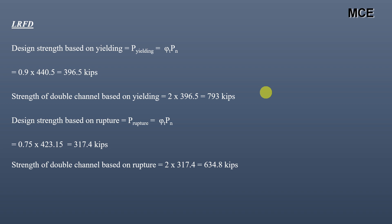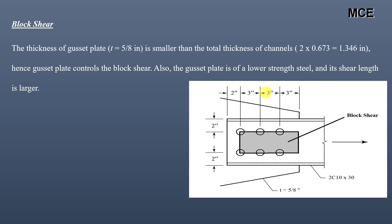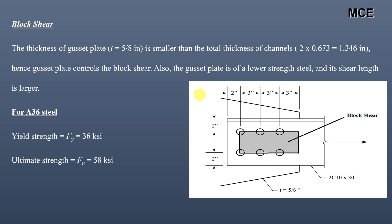Now we calculate the block shear strength. Since the gusset plate thickness of 5/8 inch is smaller than the total channel thickness of 2 × 0.673 = 1.346 inch, the gusset plate controls block shear. Also, the gusset plate is A36, a lower-strength steel than A572, and has a larger shear length. So we calculate block shear for the gusset plate only. For A36 steel: Fy = 36 ksi, Fu = 58 ksi.